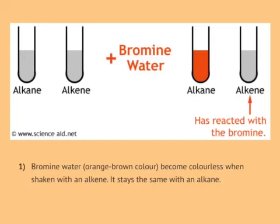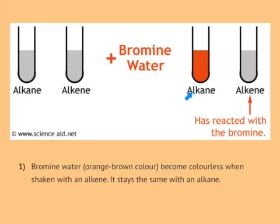The next thing you need to know is the test for alkenes. Molecules with carbon-carbon double bonds are called unsaturated molecules. An alkane has only single bonds, while an alkene has double bonds. The test for alkenes is to add bromine water, which is normally an orange-brown colour. If you add bromine water to an alkane, it stays orange or brown — the same colour as the bromine water.